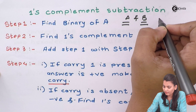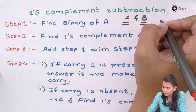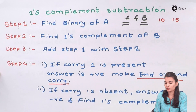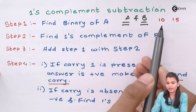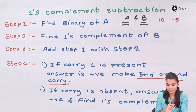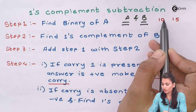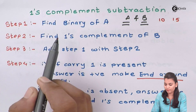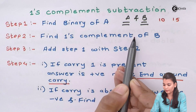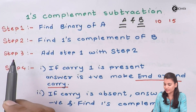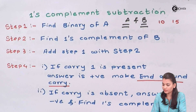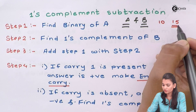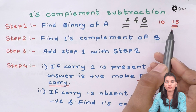Let's take an example. The value of A is 10 and the value of B is 15. Step 1 is to find out the binary of A — in this case, the binary of 10. Step 2 is to find out the one's complement of B. Our second number is 15, so we will find out the one's complement of 15.